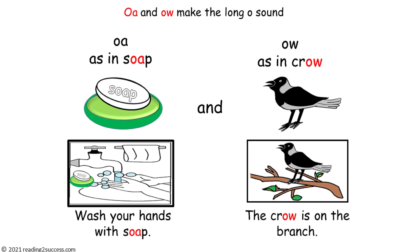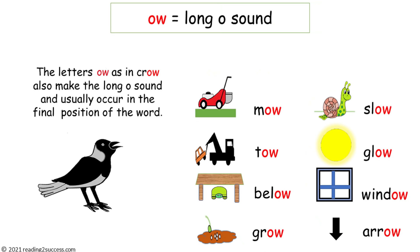Explain to kids that just as O-A made the long O sound in Soap, there is also another pattern, O-W, that makes the long O sound heard in Crow. So now read these words with kids: mow, tow, below, grow, slow, glow, window, and arrow.